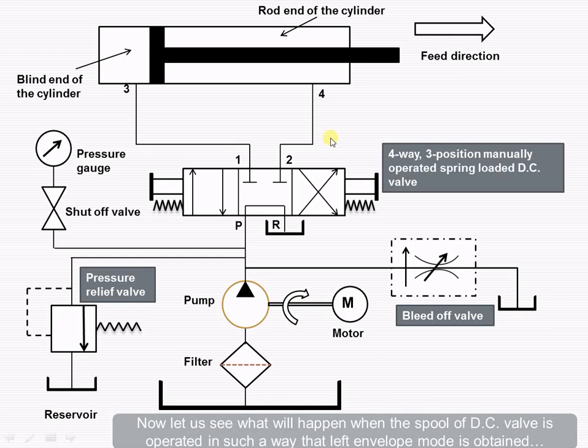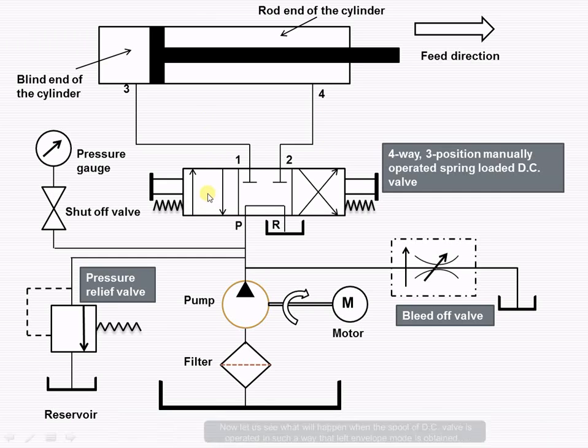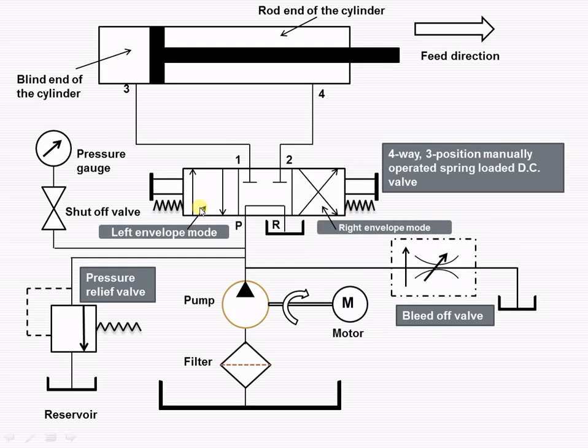Now, let us see what will happen when the spool of the direction control valve is in the left envelope mode. This is the left envelope mode, and this is the right envelope mode.